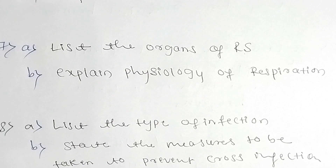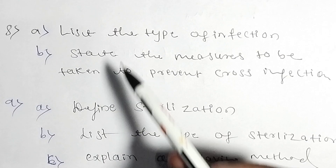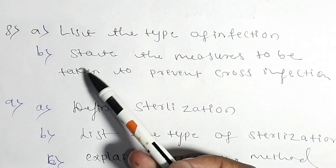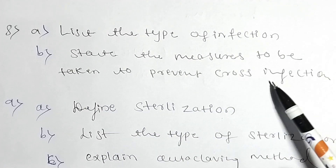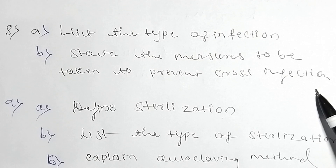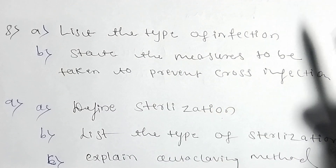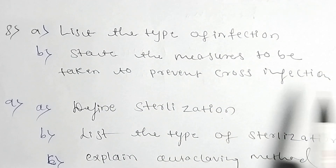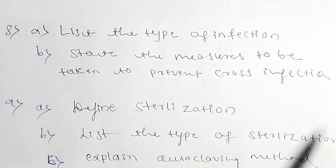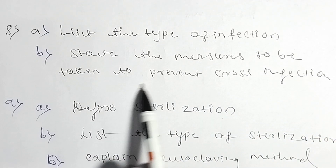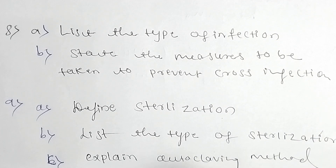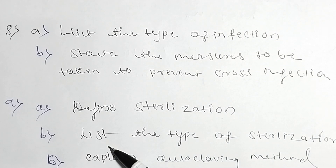The next question: A is list the types of infection — whatever types there are, write them down. B is state the measures to be taken to prevent cross infection.